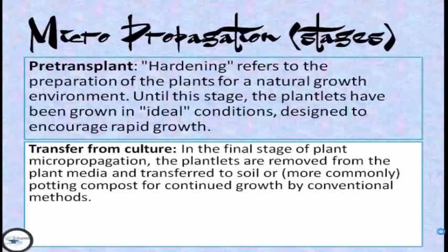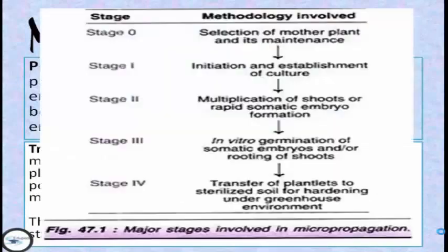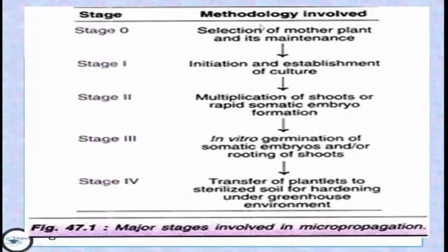The next stage is transfer from culture. So after establishment, multiplication, and pre-transplant, we have the transfer to an ideal and natural environment. In the final stage of plant micropropagation, the plantlets are removed from the plant media and transferred to soil, or more commonly, potting compost for continued growth by conventional methods. This stage is often combined with the pre-transplant stage. As you can see here, we have stage 1 selection of the model plant, establishment, multiplication, pre-transplant, and transfer to the soil.